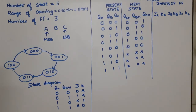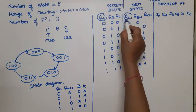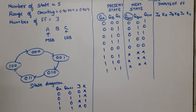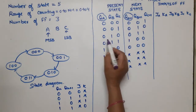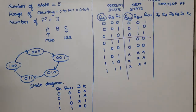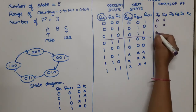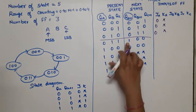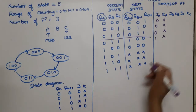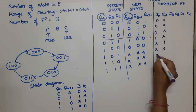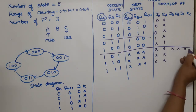For JA and KA, we look at the present state QA and next state QA+1. In the first three cases, both present and next states of QA are 0, giving JA=0, KA=X. Then for the case where QA goes 0 to 1, JA=1, KA=X. For QA going 1 to 0, JA=X, KA=1. The last case is a don't care, so JA=X, KA=X.